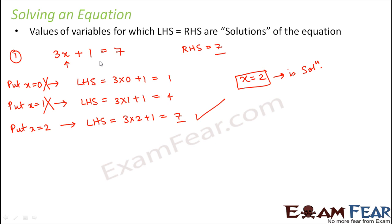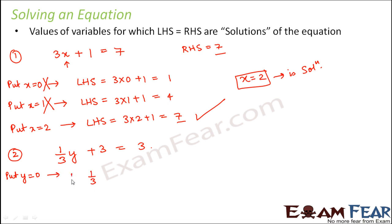Solutions for different equations will definitely be different. This method of trying different values of the variable is called the trial method — or hit and trial — where we keep trying one value, fail, take another, fail again, until we reach the correct value. This shows that only certain values make the equation true, i.e., make LHS equal to RHS. Let us take another example: 1 by 3 times y plus 3 is equal to 3. Trying y equal to 0, the LHS is 1 by 3 into 0 plus 3, which equals 3 — the same as the RHS. So y equal to 0 is the solution.